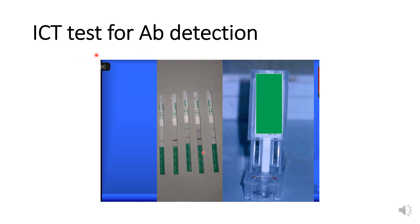This is the immunochromatography test for antibody detection against the antigen of Leishmania. And we can see this test is positive. Control band will also be there and test result will also show the band. And if there is only control band, the test will be negative. This is how immunochromatography test for diagnosis of Kala-Azar is done.